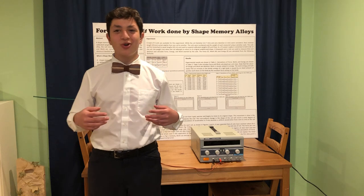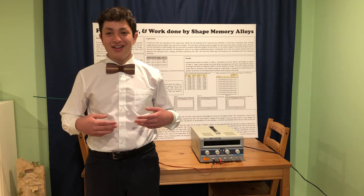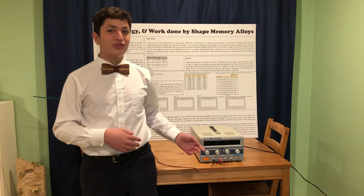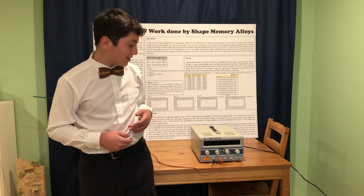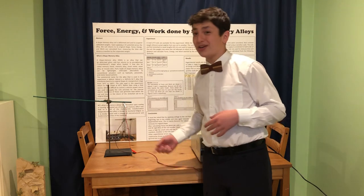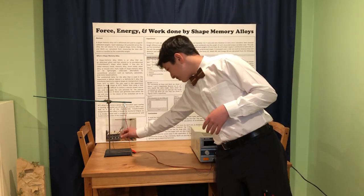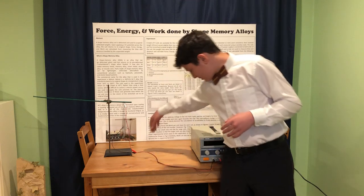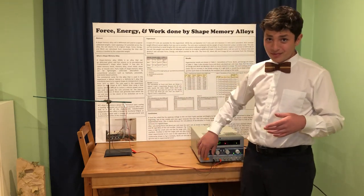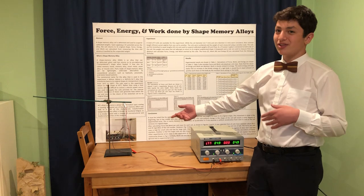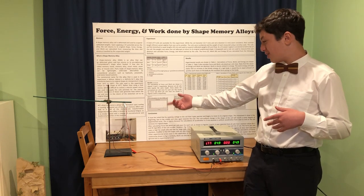That way we know we're applying a constant amount of electricity. We're going to use 5 volts, which heats the coil instead of applying random heat. We're adding a 20 gram weight to the coil and we're going to deform the coil like that, and then apply the 5 volts. The coil will slowly heat up, retrieve its shape, and the weight will go up.